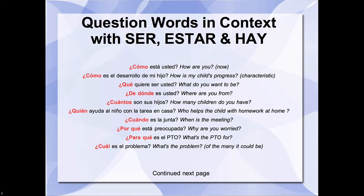We've been working with the verb ser, estar, and the impersonal verb hay, meaning there is, there are. Remember that ser is about essence and being — what my name is, what I do, where I'm from. Estar also means to be, but it's about how I feel and about where things are located in space. Hay, spelled H-A-Y, simply means there is, there are, and it does not conjugate.